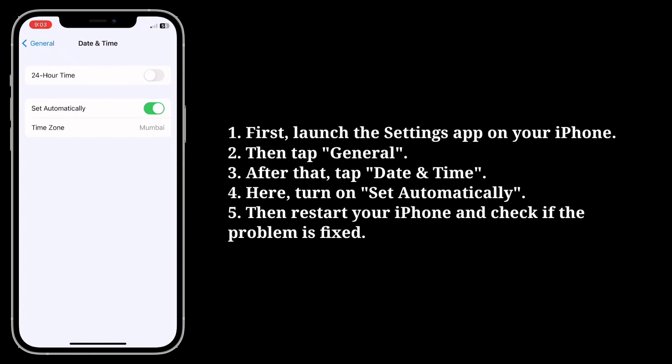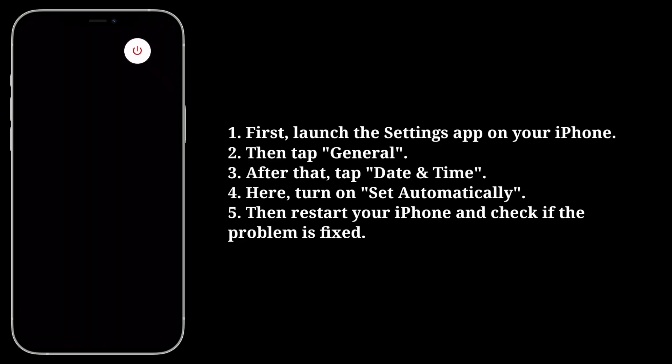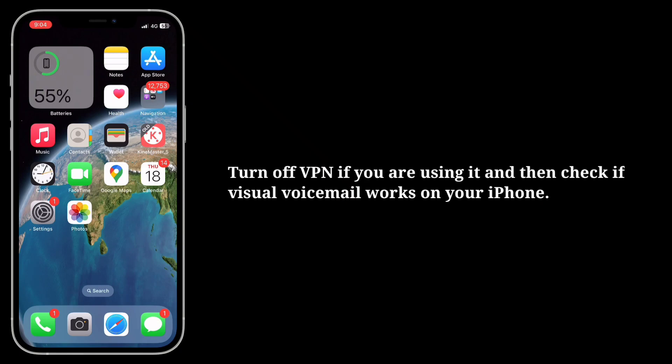Then restart your iPhone and check if the problem is fixed. The fourth tip is to turn off VPN. If you are using a VPN, turn it off and then check if visual voicemail works on your iPhone.